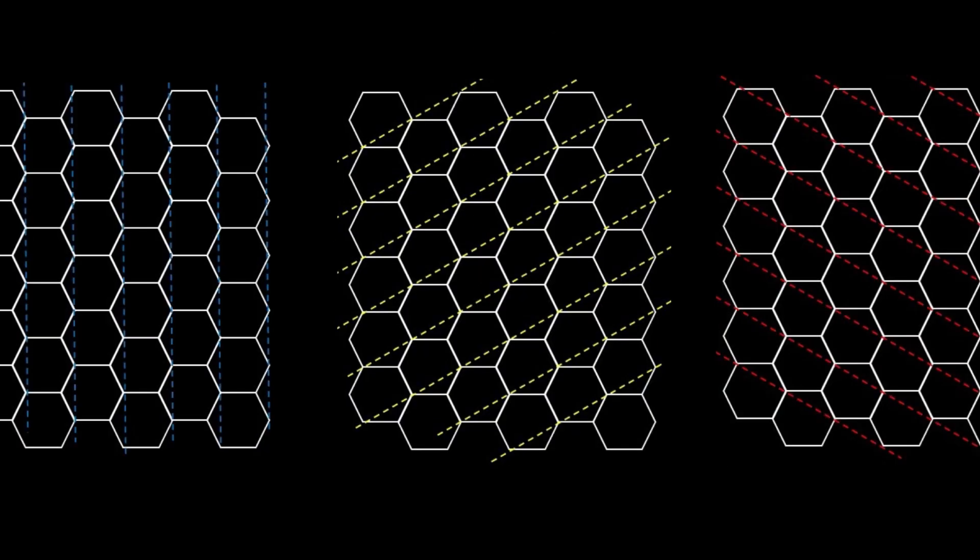But because of the rotational symmetry, there will actually be three sets of slits, all acting at the same time, which I've shown with the blue, yellow and red lines.